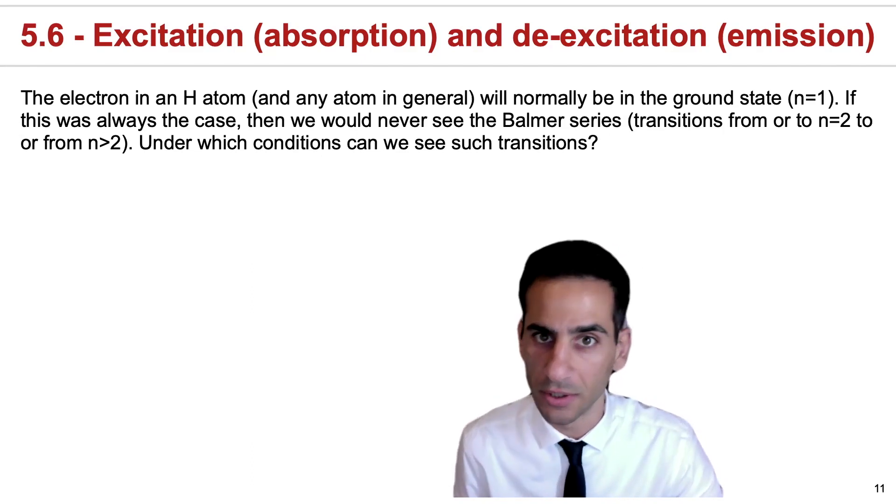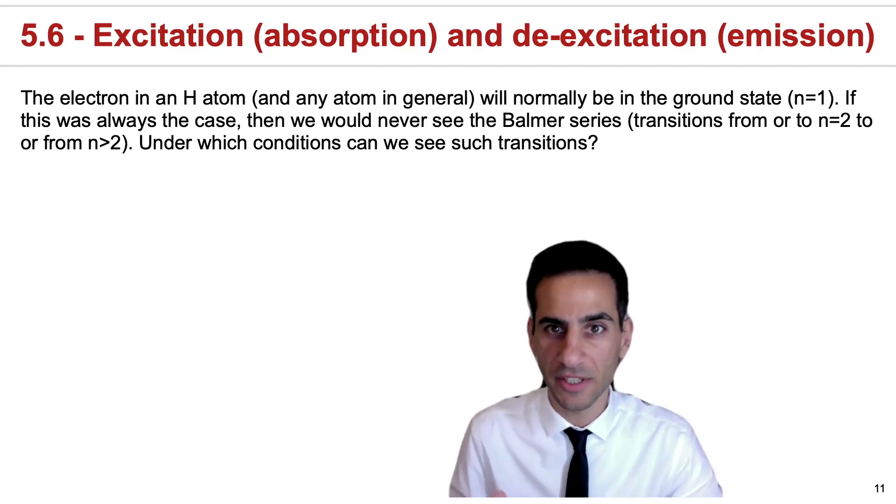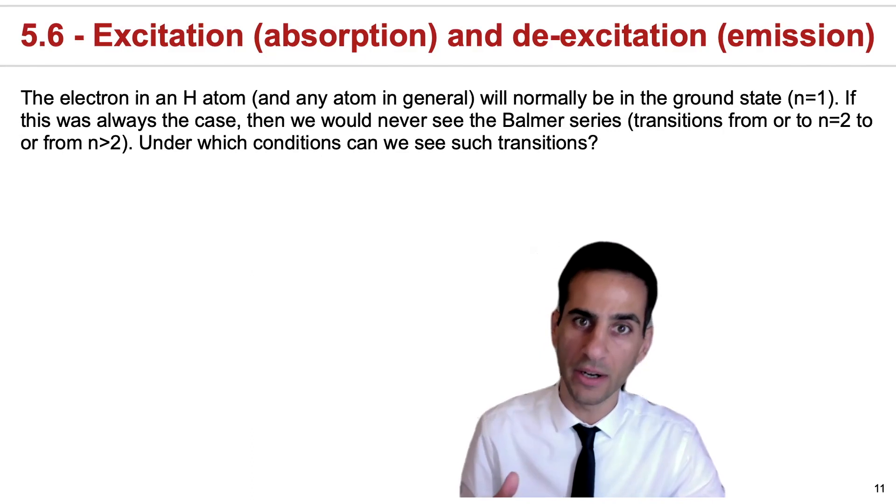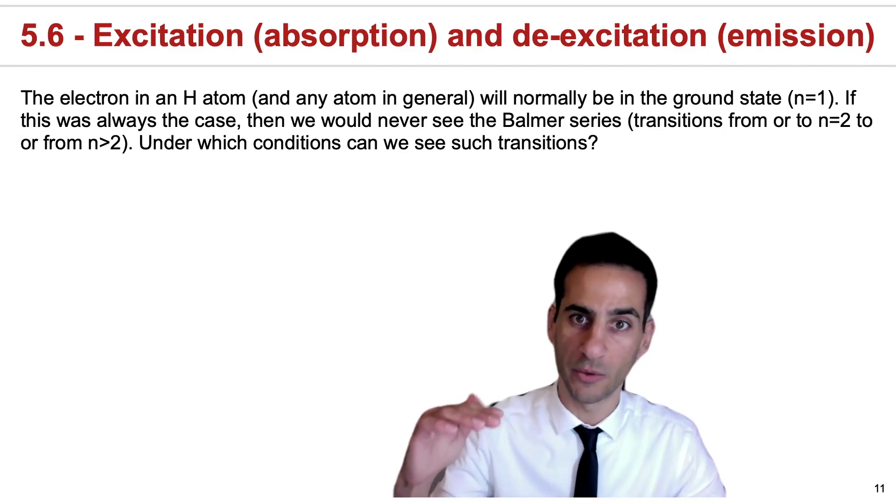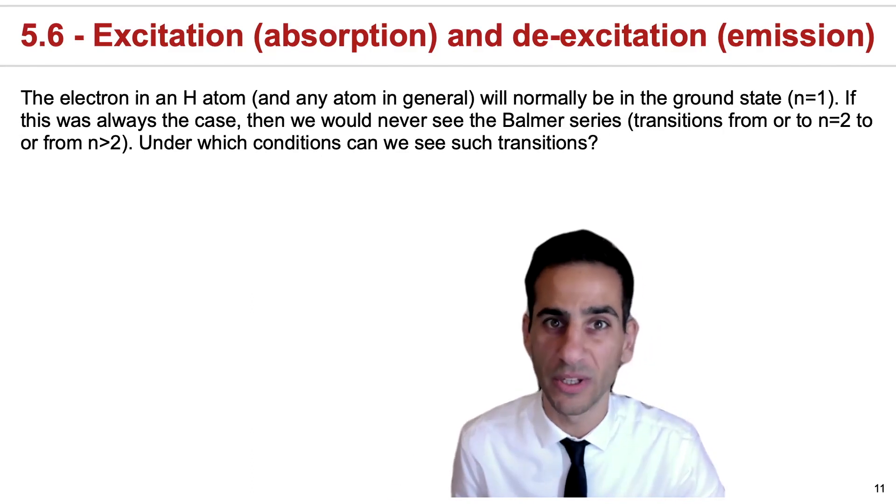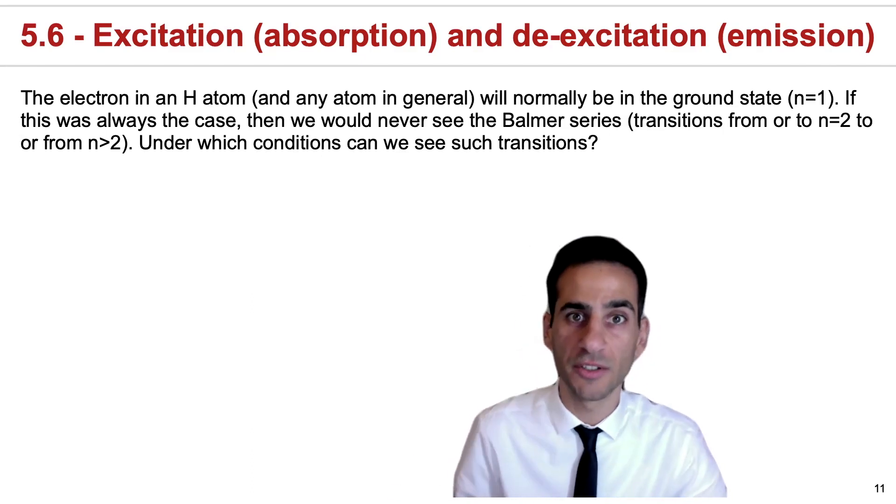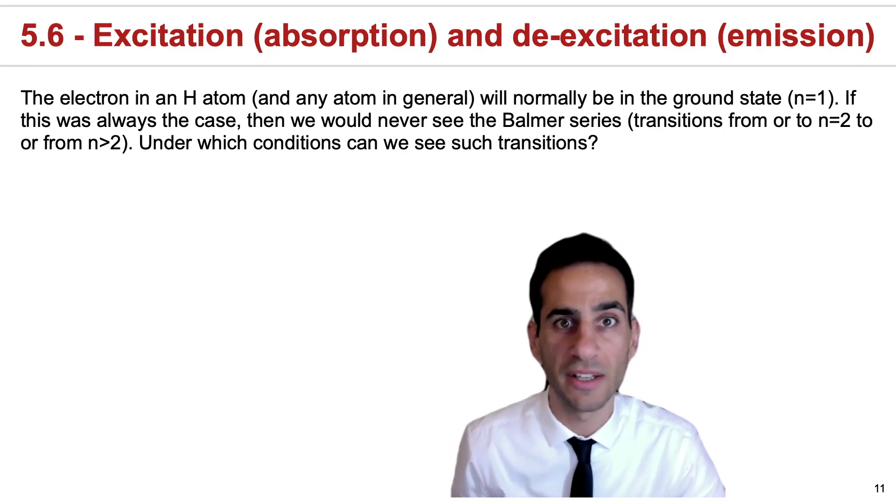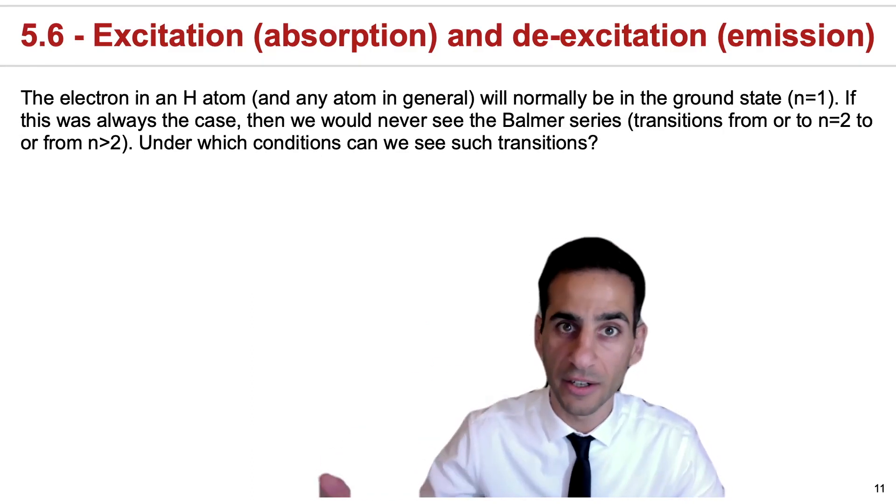For example, in absorption. For us to see Balmer series in absorption, we actually require electrons to be in n equals 2, for example. Or to see Balmer series in emission, we actually require electrons to go down to n equals 2, meaning they have to be at an even higher energy.